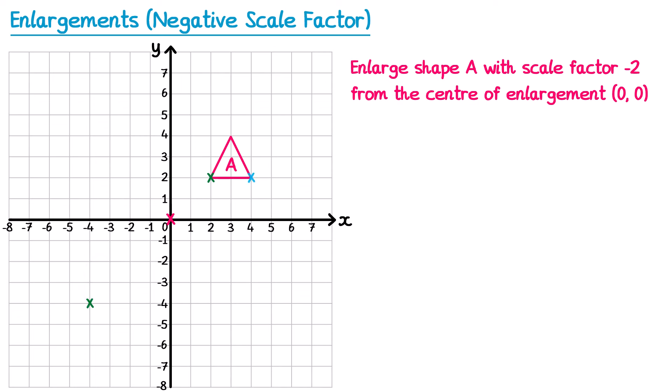Now let's pick the bottom right corner — the blue cross. From the center to the blue cross I go 4 to the right and 2 up. I go back to the center and do the opposite: 4 left and 2 down — that's scale factor negative 1. I repeat that again, 4 left and 2 down — that's scale factor negative 2. So the blue cross maps to its new position.